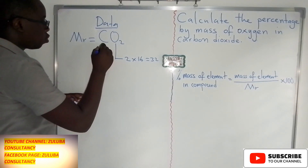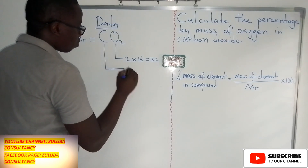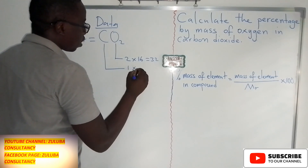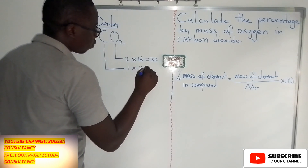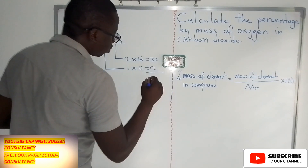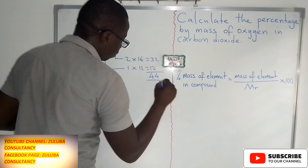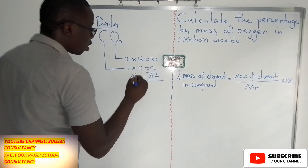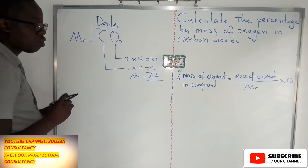Thereafter, we go to carbon. We have one atom of carbon multiplied by the relative atomic mass of carbon, which is 12, giving us 12. In total, we get the Mr of 44. So this is the Mr of carbon dioxide.